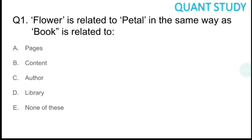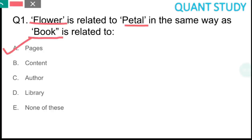Let's start with the first question, which is based on analogies. The question asks: flower is related to petal in the same way as what is related to pages? The relationship is that a flower is made up of petals. Similarly, a book is made up of pages. The answer is option A, Pages.